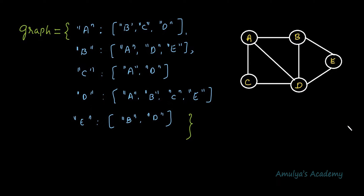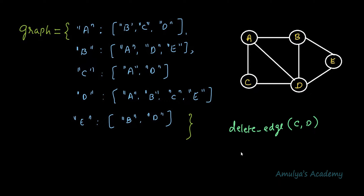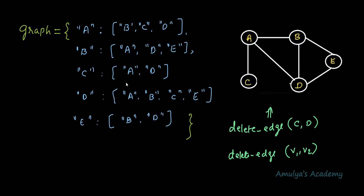First let's see how to delete an edge from the undirected unweighted graph. If I want to delete this edge in this graph, I need to call delete edge C D — that is, while calling the delete edge function we need to mention two vertices V1 and V2. Here V1 is C, V2 is D. After deleting the edge, this graph will look like this. Next let's see what changes we need to do in the dictionary after deleting an edge.